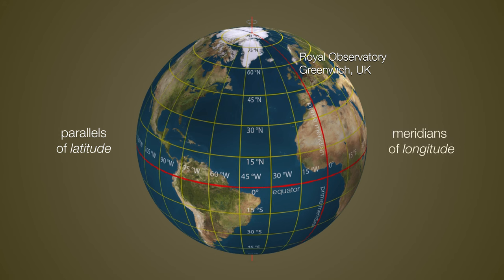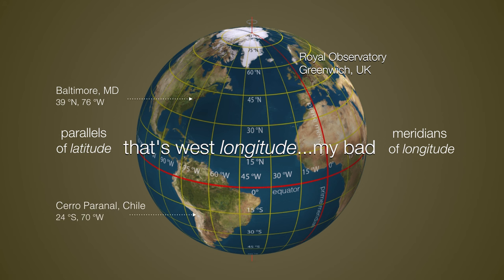For example, here in Baltimore, we are at 39 degrees north latitude, 76 degrees west longitude. A southern example would be Cerro Paranal in Chile, that's 24 degrees south latitude, 70 degrees west. And Rome, Italy is 42 degrees north and 12 degrees east. So that places Rome at about the same latitude as Boston, Massachusetts.